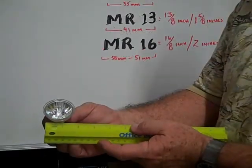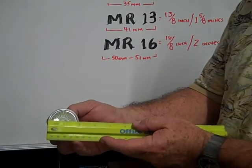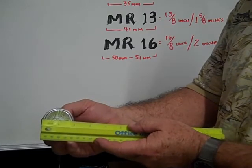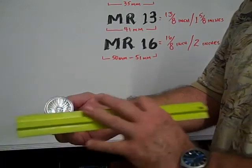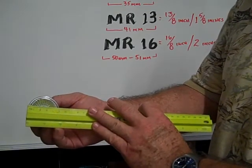This is an MR-16 mirror reflector bulb. It measures across the diameter of the face of the bulb, sixteen-eighths of an inch, or two inches, which is equivalent to fifty to fifty-one millimeters.